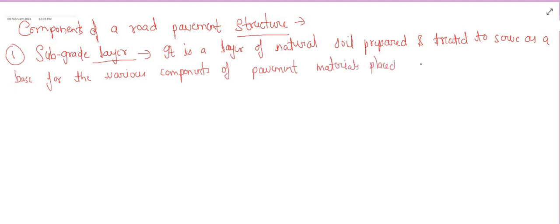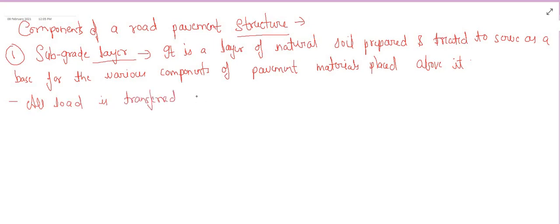The base layer sits above the subgrade. The subgrade layer is essentially our natural soil layer — the natural ground that we provide certain treatment to. All the pavement load is finally transferred down to the subgrade layer.